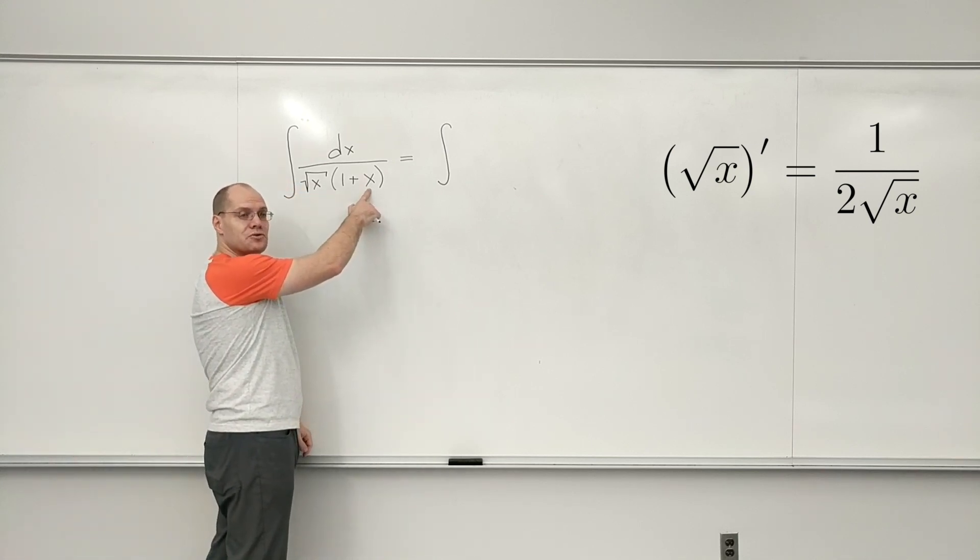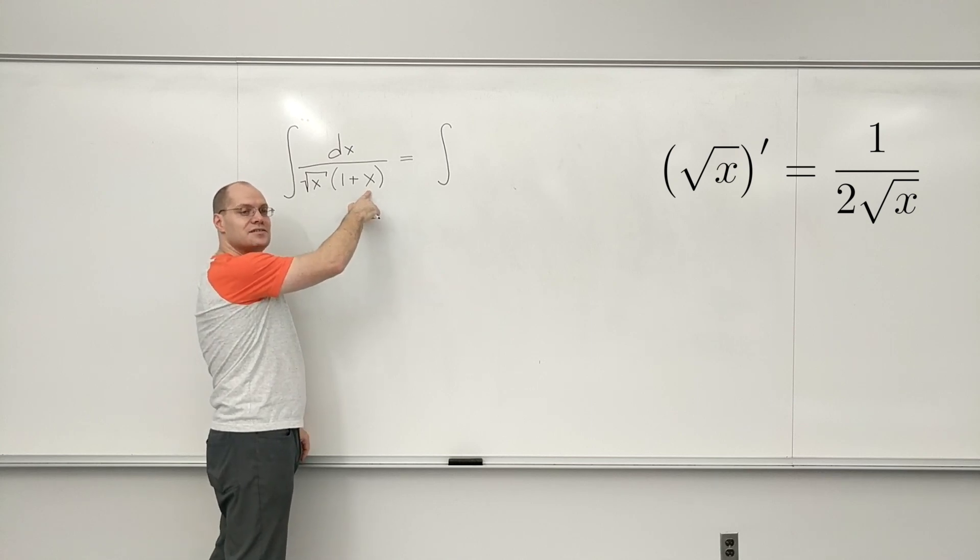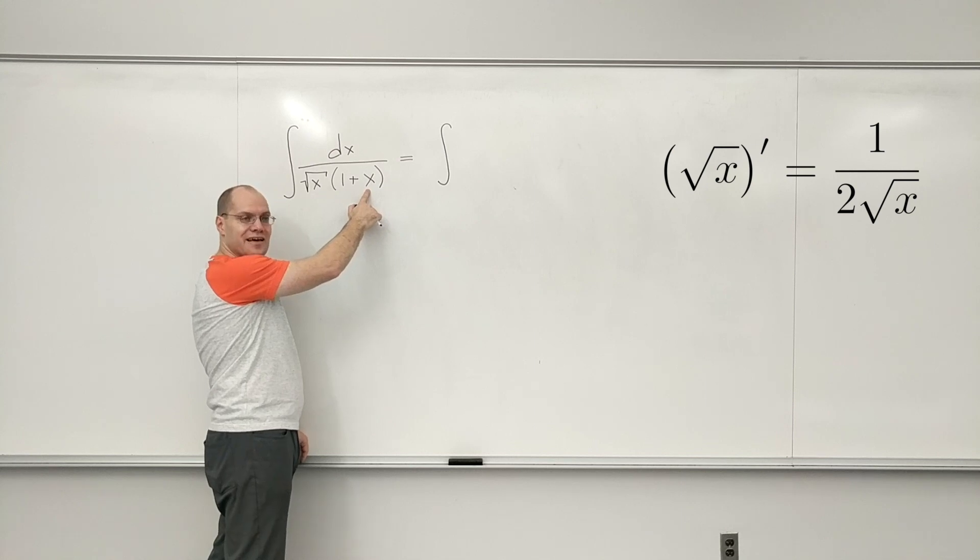And then this appears to me as that quantity squared. And that's the moment the light bulb goes off and I recognize arc tan.